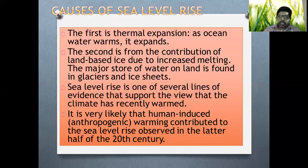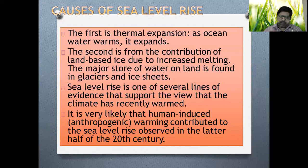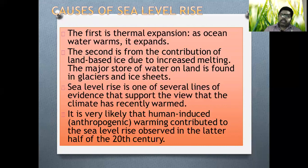So, as we warm the water, it is called thermal expansion. The second cause is the contribution of land-based ice due to increased melting. The major store of water on land is found in glaciers and ice sheets. Our planet has ice glaciers at the poles and in different areas. But due to the expansion in the thermal capacity of water bodies, the warming is reaching the glaciers, and now the glaciers are also beginning to melt.